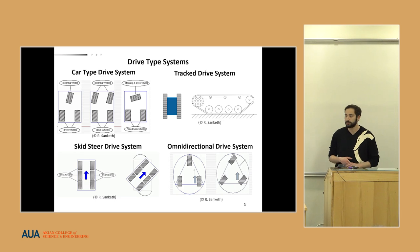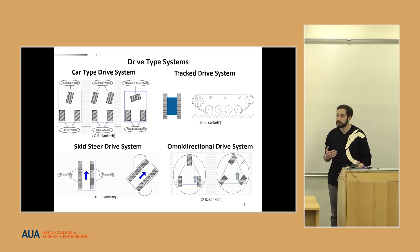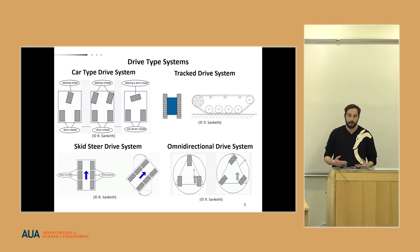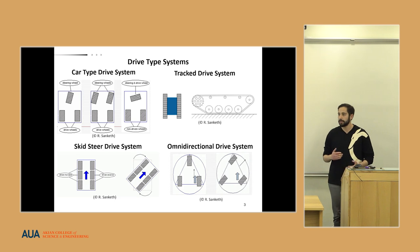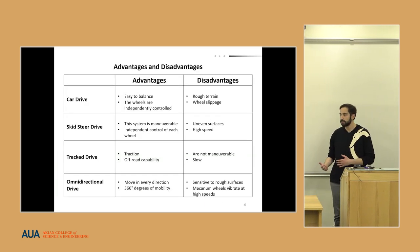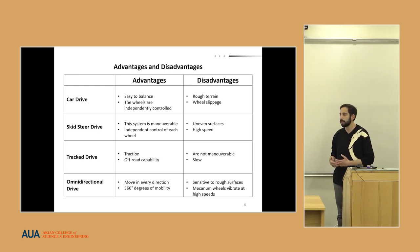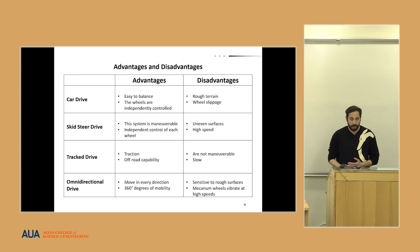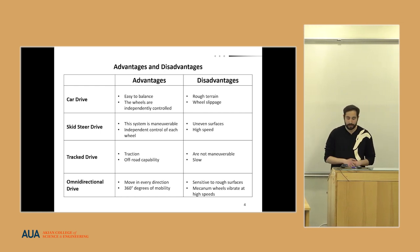Skid steer drive and track drive have the same working system. However, skid steer drive can have from four to six wheels and has similarities with car-type drive. Omnidirectional drive systems can move in any direction, and the wheels are mechanically interconnected. These systems have advantages and disadvantages. Some have disadvantages with uneven surfaces and high speeds, while others have advantages with maneuverability.